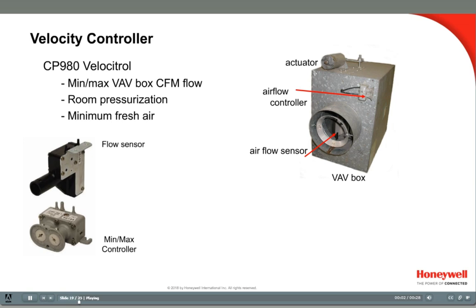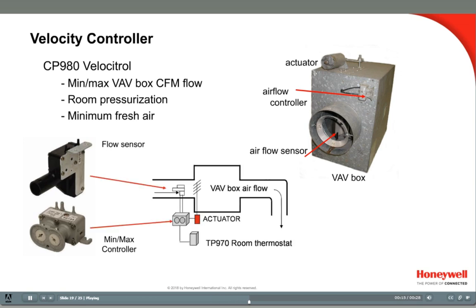Although not classified as a relay, the CP980 Velocitrol is an air velocity sensor with a pneumatic controller used to control air flow in VAV boxes. There are direct-acting and reverse-acting models. Here it is used with a room thermostat to control CFM through a VAV box, providing pressure-independent air control. It is also used in a variety of other air flow control applications.